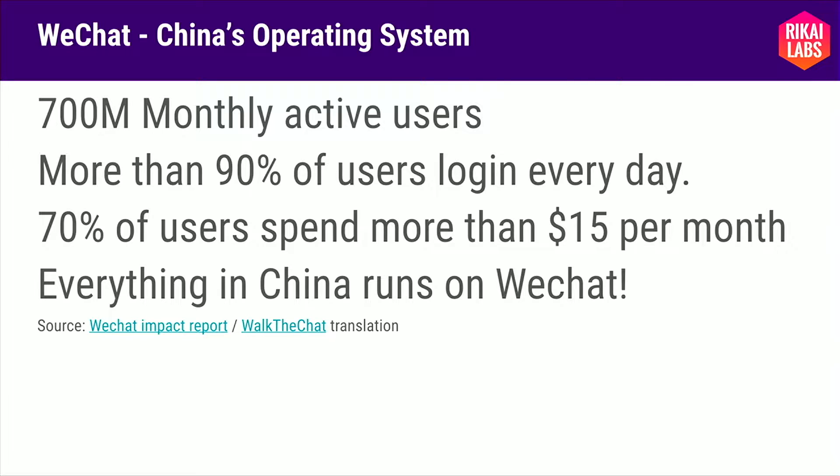If anyone's been living under a rock, WeChat is kind of China's uncontested operating system for just about everything. There are 700 million monthly actives. Everyone logs in every day and so much money goes through the system. People use WeChat for paying restaurant bills, giving money to friends. Basically, it's the one system that is central to everything.